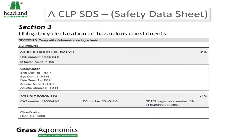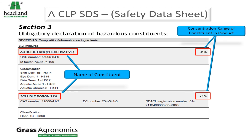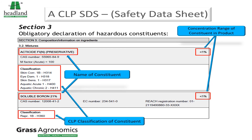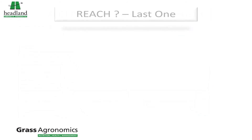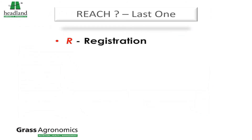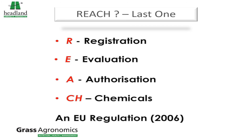Section 3 contains more details on the declared constituents creating the hazards, including what the hazard actually is, the concentration of the component, the CLP classification, and the REACH registration of the constituent. REACH is the Registration Evaluation Authorization of Chemicals, and it's an EU regulation from 2006.